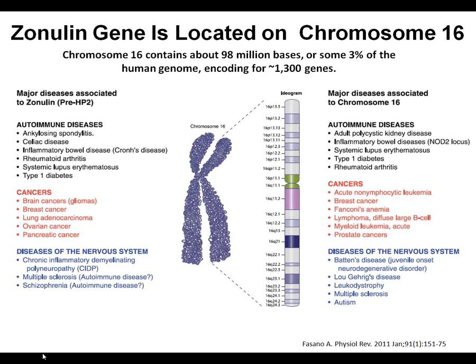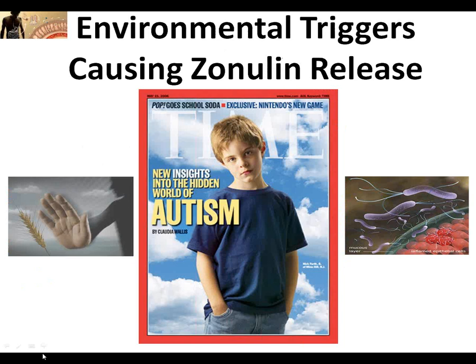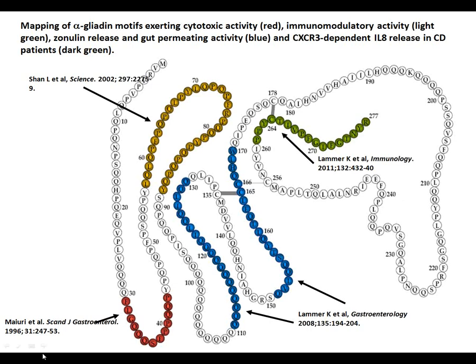There is a link between environmental triggers and intestinal permeability due to specific molecules that cause zonulin release from the environment, causing loss of gut barrier function on a specific genetic background. Among these, gluten has been studied the most. Two peptides in gliadin — the toxic element of gluten — communicate with the intestinal mucosa to instruct it to release zonulin, opening shortcuts for these molecules to gain access into our body.